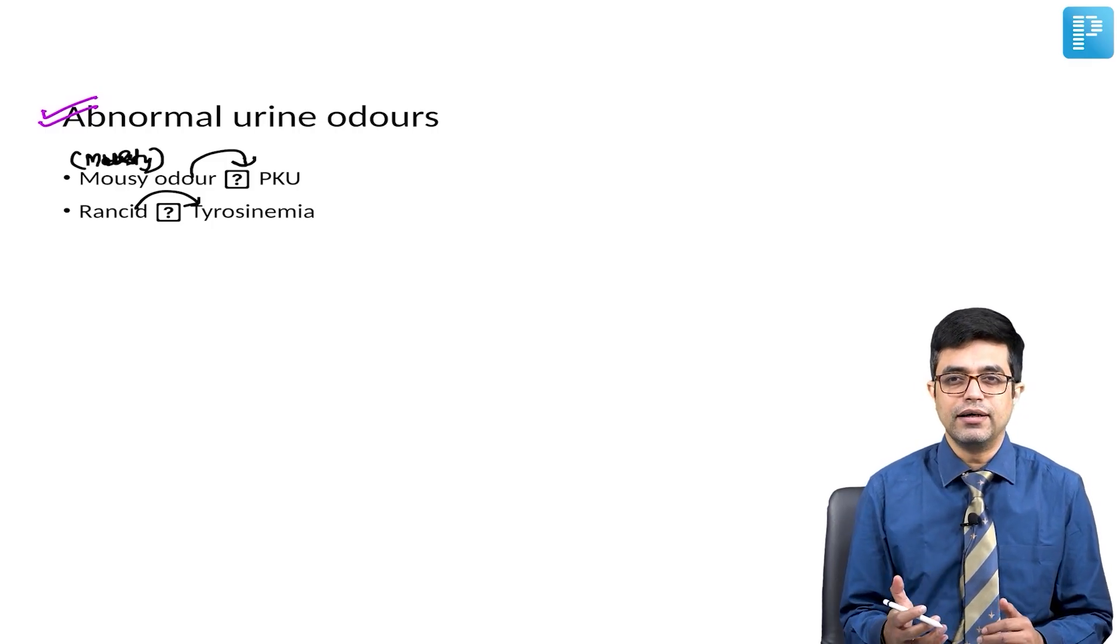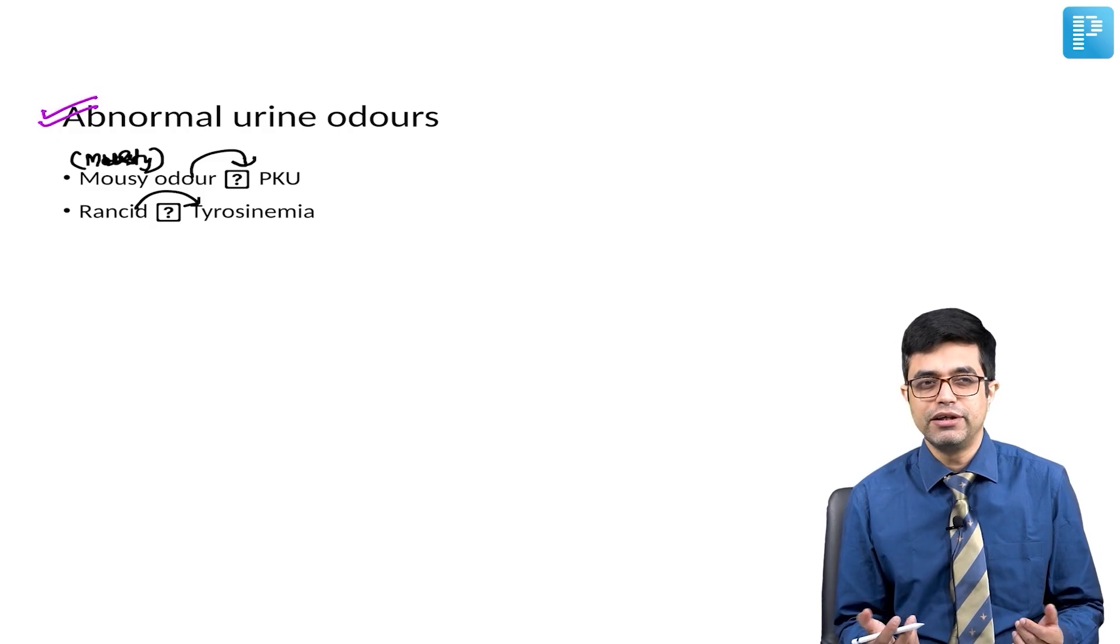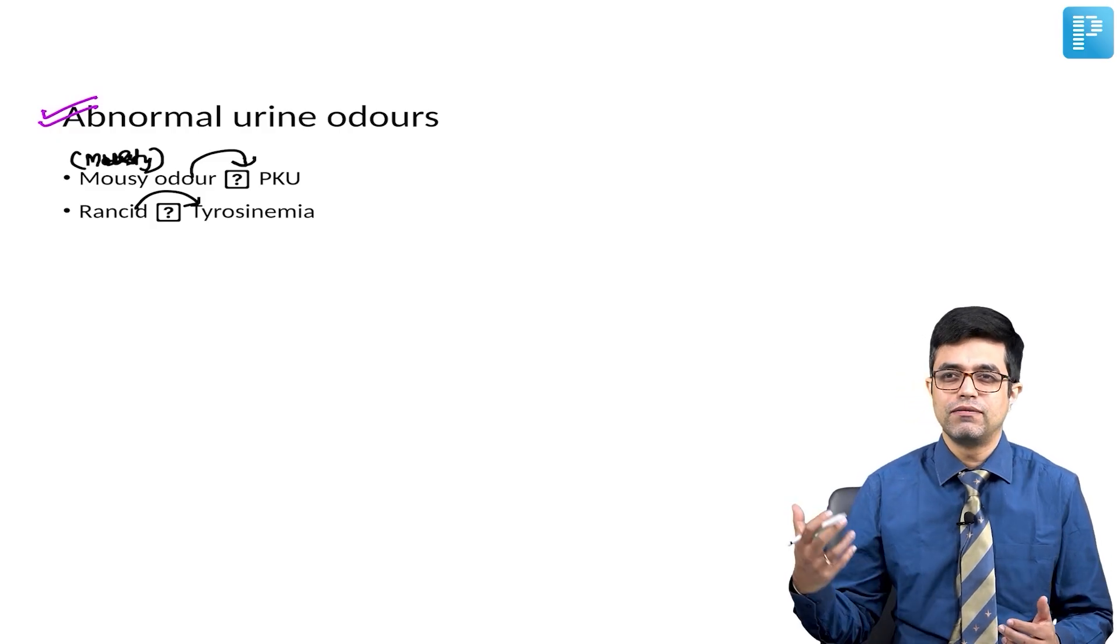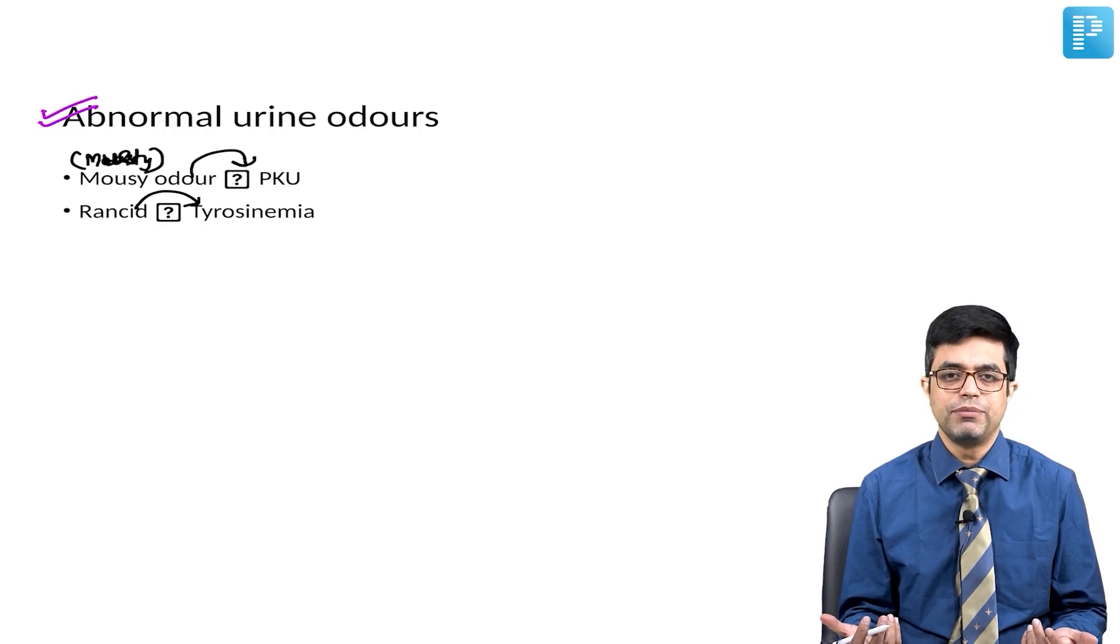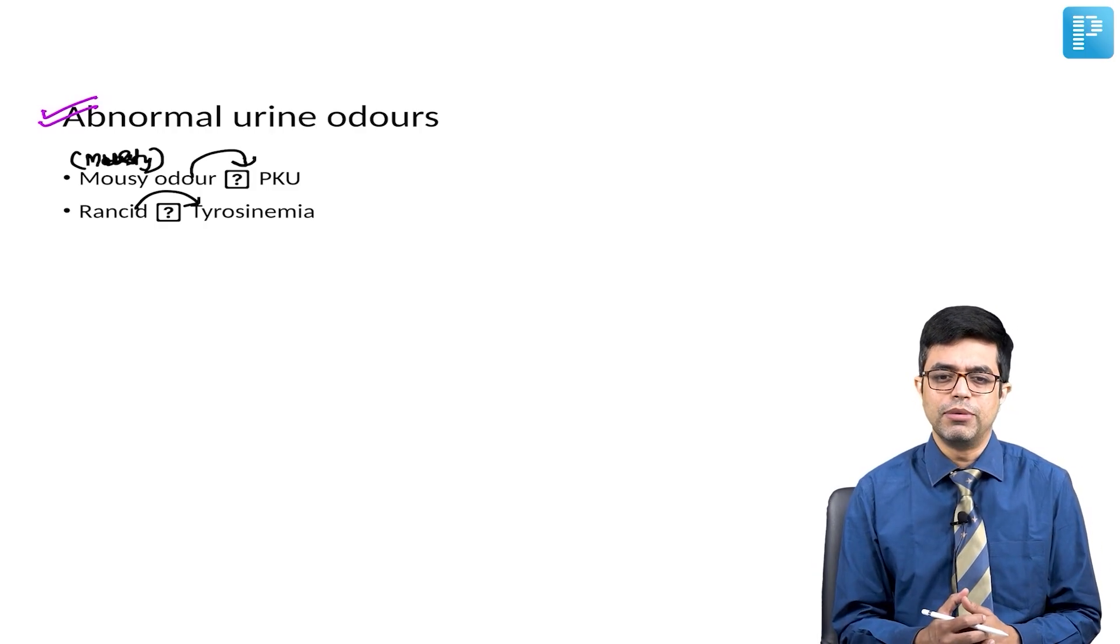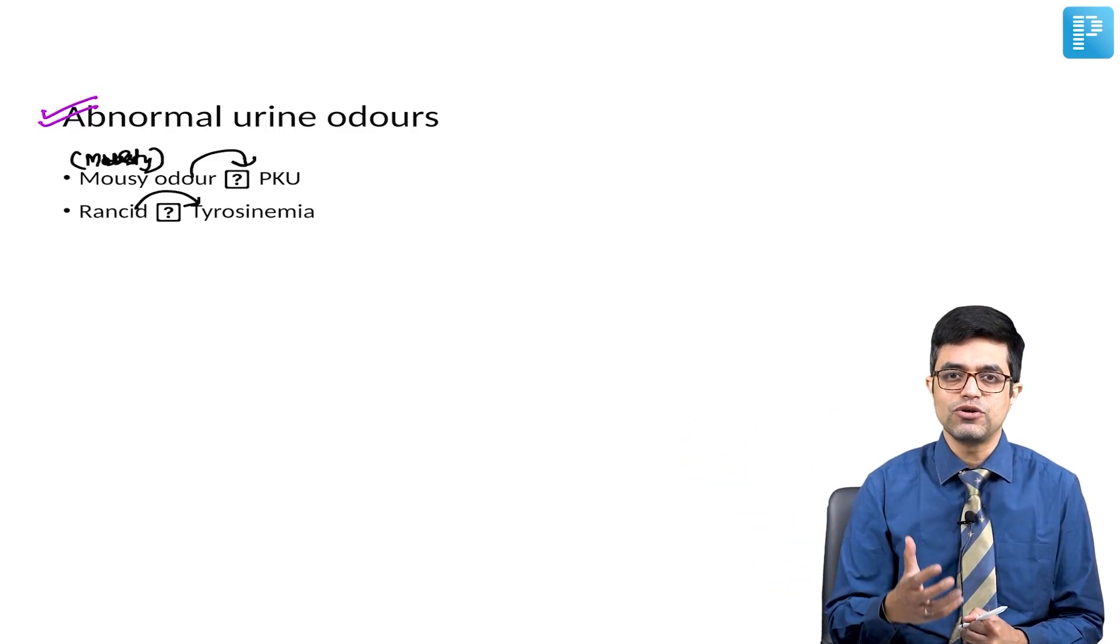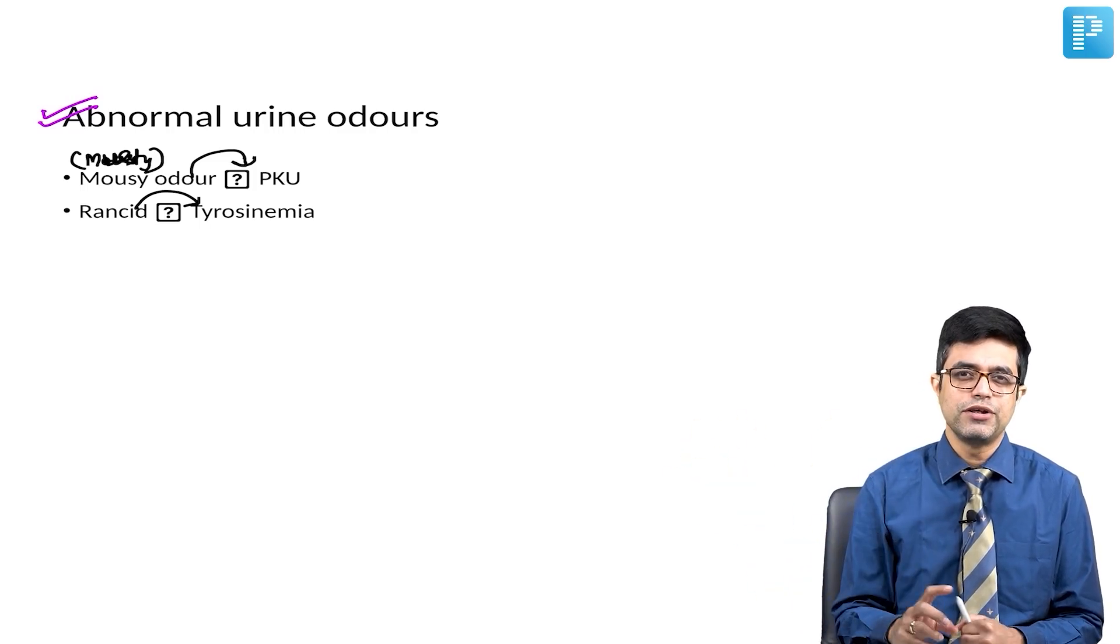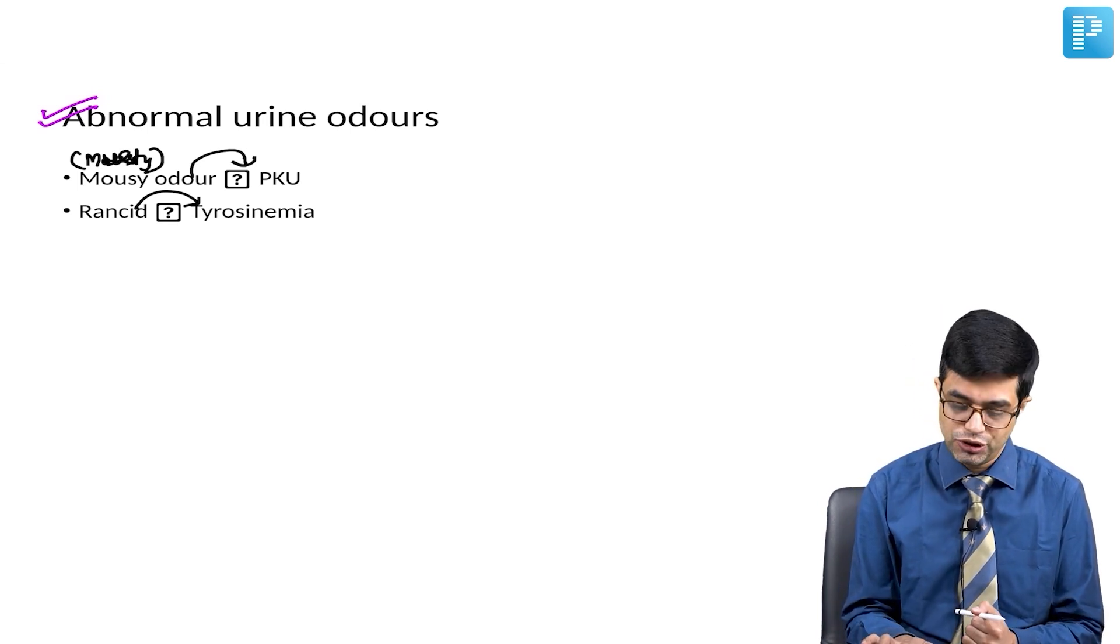Rancid is what I should call as spoiled butter. If you keep the butter for—the expiry date of freshly made butter, if you keep it refrigerated, is around seven days, ten days. If you add preservatives, it is about a month or so. But if you keep a butter for one year and you take it out from the fridge and you try to smell it, the type of smell which will come out is the smell you find in urine of tyrosinemia patients.